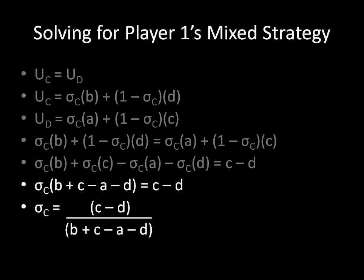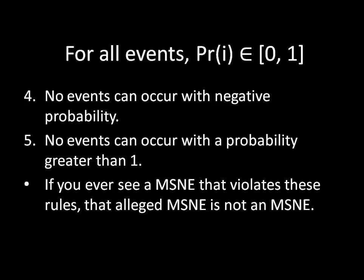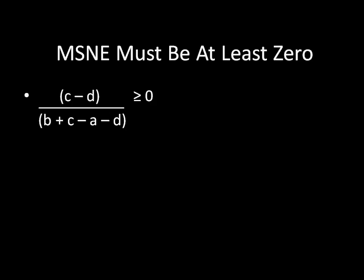First, we need to prove that this is a mixed strategy that's valid. And we do that by checking on a couple of probability rules that I gave you last time. And to recall, we see that no events can occur with negative probability, and no events can occur with probability greater than 1. If our mixed strategy violates one of these rules, then we're going to have to throw it out.